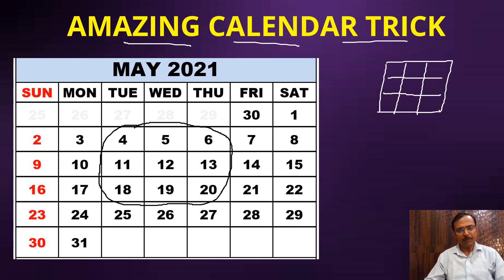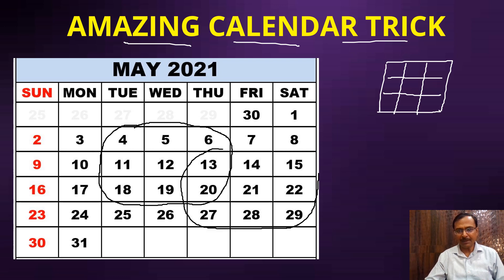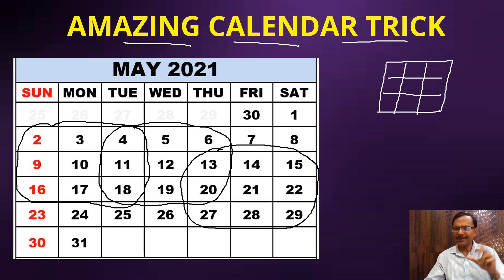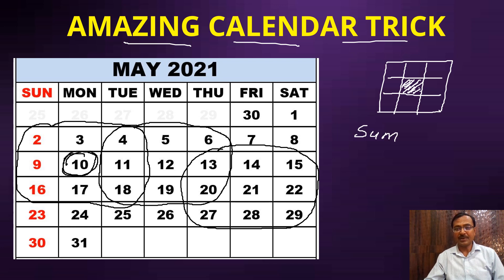You need to tell your friend to pick up any block of nine numbers — no number should be missing. Ask him to add all the nine numbers in that block. Irrespective of where in the calendar he picks the block — it can be from any corner — all nine numbers should be complete. Tell him to keep the sum safe, then ask him to tell you only the middle number in the block. You will be able to tell the sum of all nine numbers within three seconds.